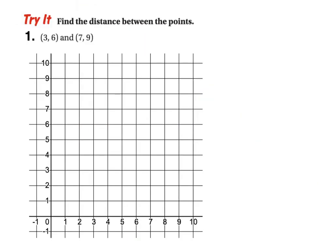Here is our first try question for this video. We want to find the distance between the two points 3, 6 and 7, 9. Remember, we want to first plot these two points on our graph, then find the vertical distance and the horizontal distance, and finally find the length of the hypotenuse of the right-angled triangle we make. Take a moment to pause the video and try this one out.